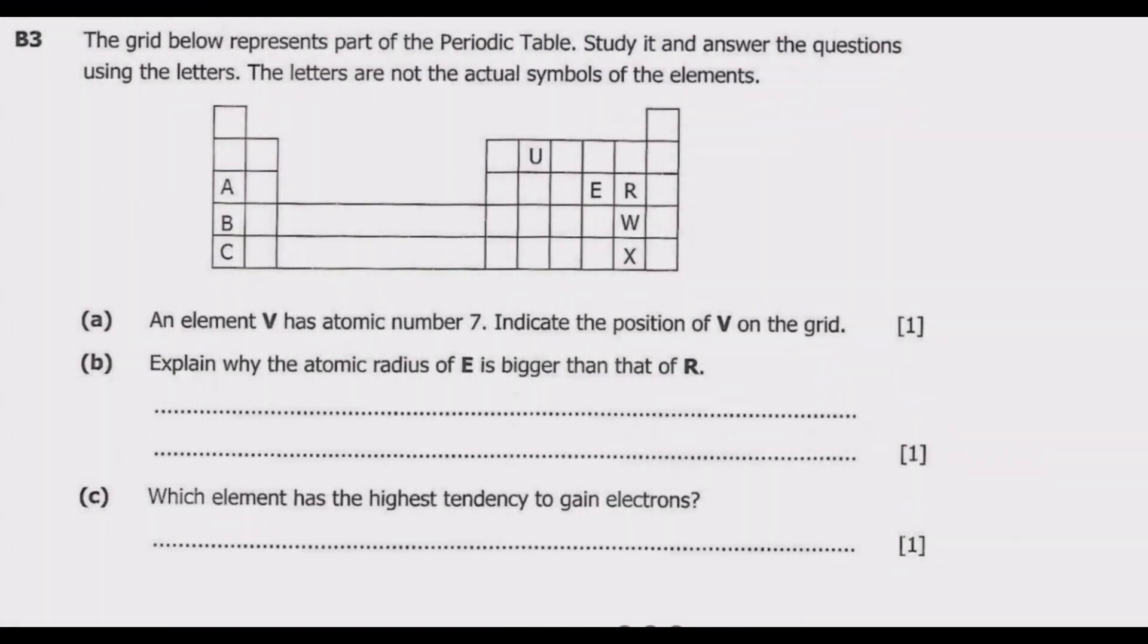Welcome viewers to the fourth episode in a series of episodes focused on the 2020 GCE science paper 2, which is chemistry. The first episode covered section A of this paper, then episode 2 looked at question B1, and episode 3 looked at question B2. If you haven't seen these episodes, please check out our YouTube channel. So let us look at question B3.